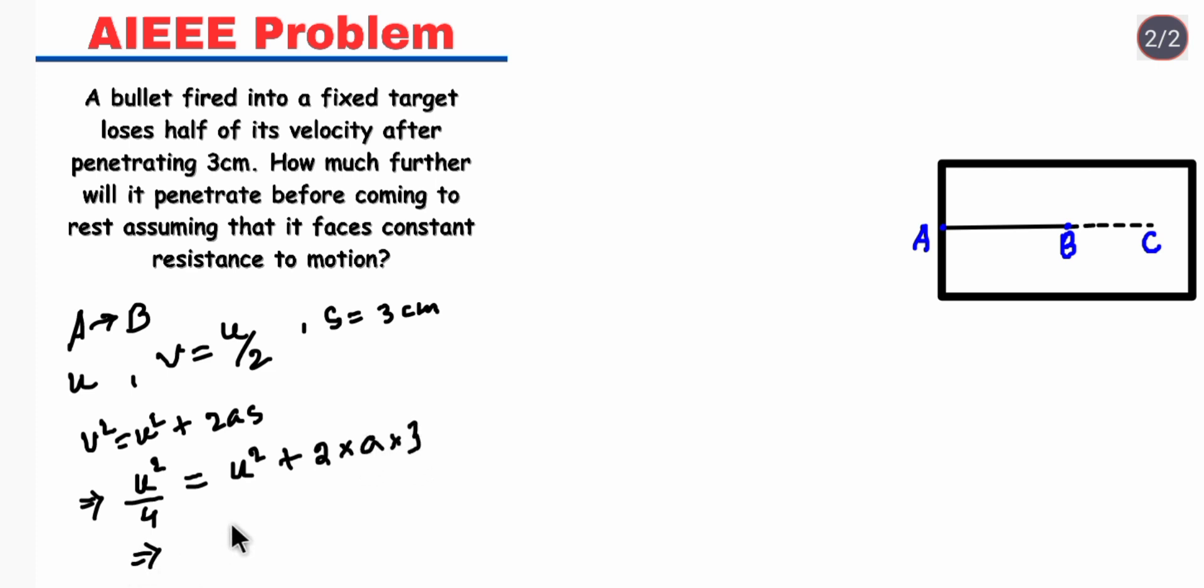If we calculate this, we will get 6A equals minus 3U squared by 4, and in the next step we will get A equals minus U squared by 8. So our acceleration is minus U squared by 8.